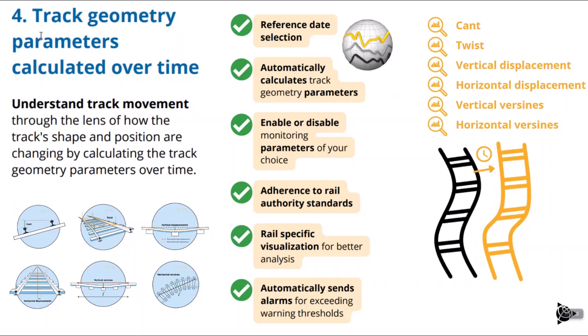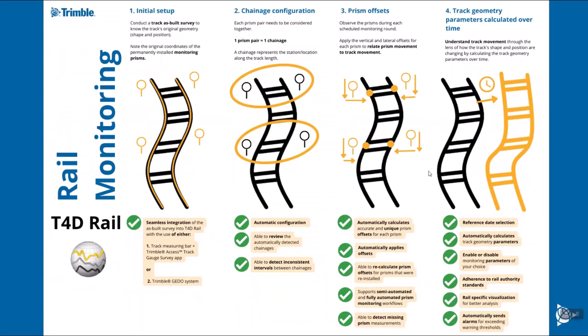T4D Rail will quickly and automatically notify you of any movement that exceeds the thresholds you have set. There are different levels: an attention stage, a warning stage, and an alarm stage. You can specify who gets notified for each stage and how they want to be notified — all done automatically. You just need to set up your project once and let T4D Rail do its thing. And that's the whole rail monitoring and T4D Rail story. I'll put links in the description to this overview as a PDF and to T4D Rail for more information. Stay tuned for more videos, and remember — monitoring never sleeps.